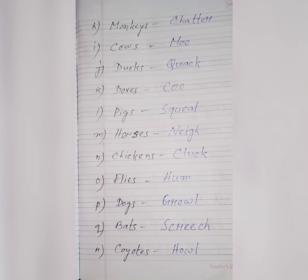K: Dove sound is coo, C-O-O. L: Pig sound is squeal, S-Q-U-E-A-L. M: Horse sound is neigh, N-E-I-G-H. N: Chicken sound is cluck, C-L-U-C-K.